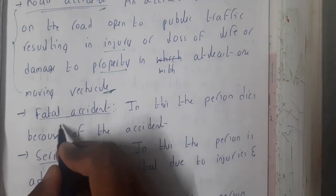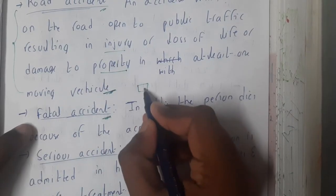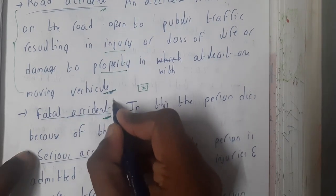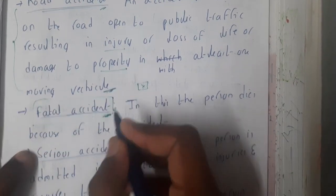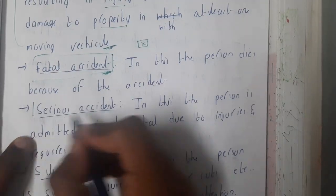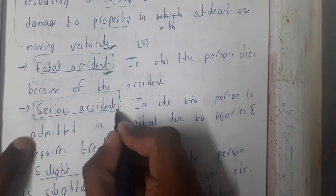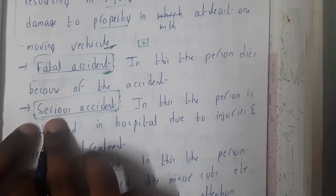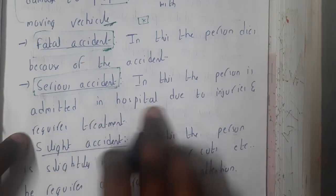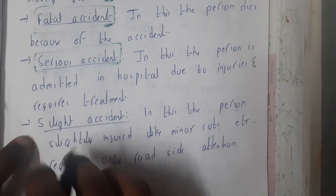The first terminology is fatal accident — if someone dies in that particular accident, we call it a fatal accident. Similarly, a serious accident is when, after the occurrence of an accident, any member is injured and the situation is a bit serious. That person needs hospital treatment.